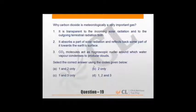Why is carbon dioxide meteorologically a very important gas? It is transparent to incoming solar radiation and outgoing terrestrial radiation - rather, it is opaque. You must know this information. It absorbs part of solar radiation and reflects some back towards Earth's surface - of course correct. Carbon dioxide molecules act as hygroscopic nuclei around which water vapor condenses - rather, hygroscopic nuclei is generally dust in the air. So overall, second option is the only correct option. One and three stand wrong.